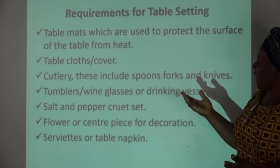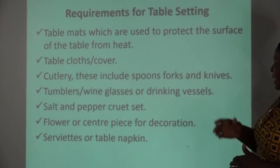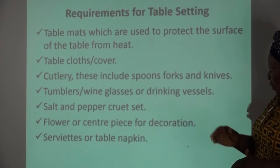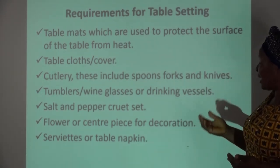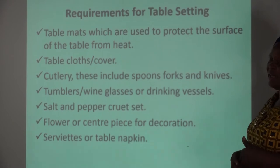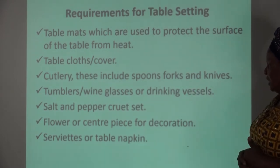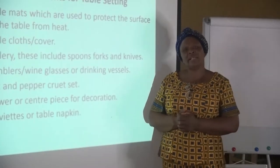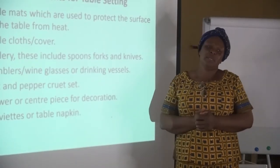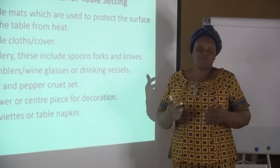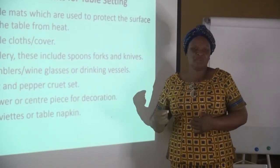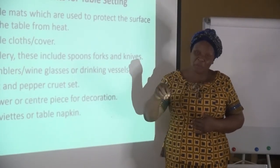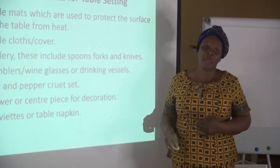Then we have cutlery, which includes spoons, forks, and knives — these are the eating implements. We have tumblers for drinking water and wine glasses for wine or any drinking vessels. We also have salt and pepper cruet sets. There are those who like to eat pepper and those who don't always feel salt in their food, so they use the cruet set for sprinkling salt or pepper on their food.